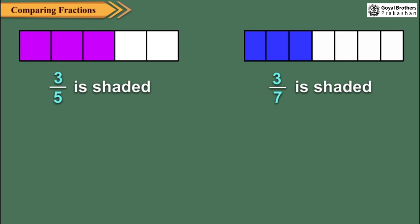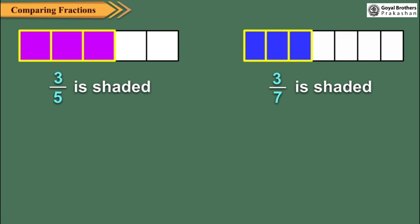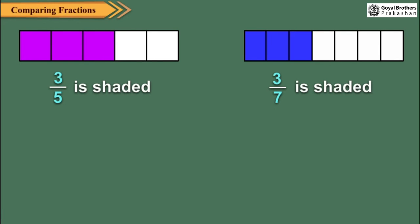Now, observe these two strips of the same length. First strip is divided into 5 equal parts. And the second strip is divided into 7 equal parts. In both strips, 3 parts are shaded. Clearly, the shaded region in the first strip is more than that in the second strip.